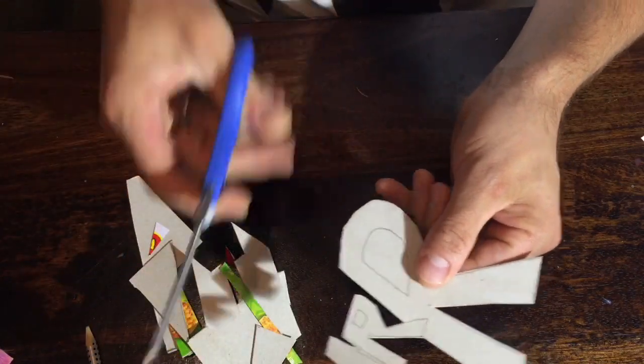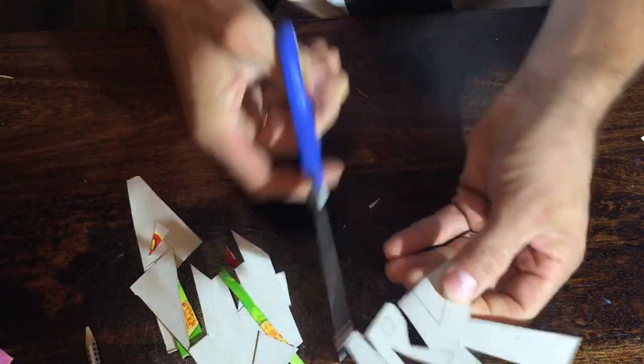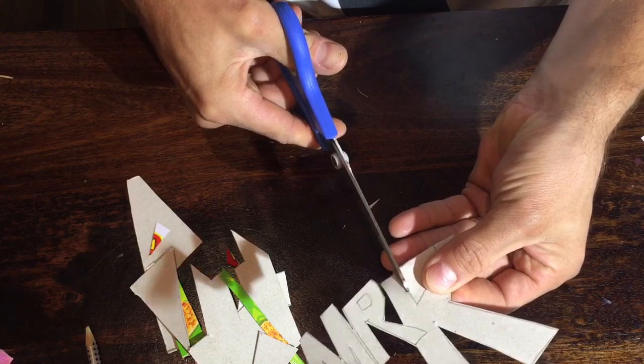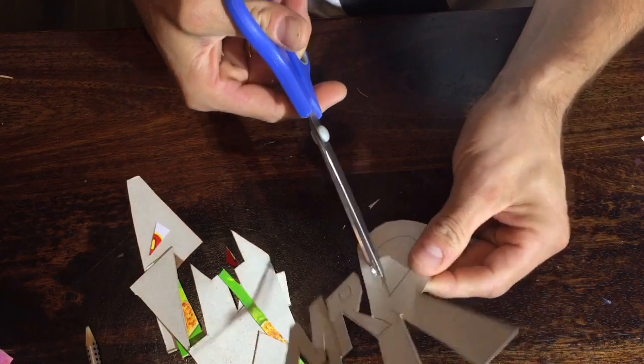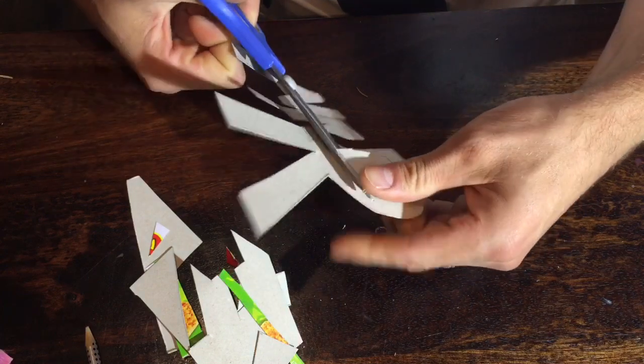Now to get those little bits inside the letters you need to kind of bend it and fold it and then you cut along the line and that gives you a gap to put your scissors into and then you can cut the rest out as normal.